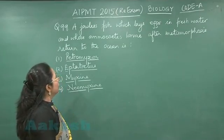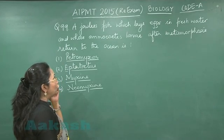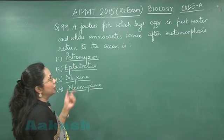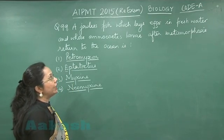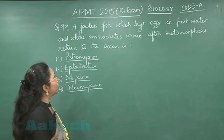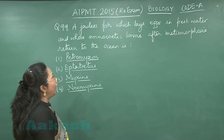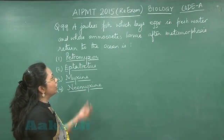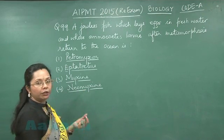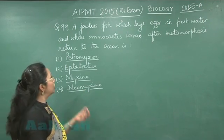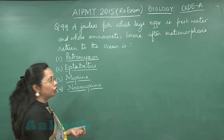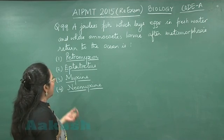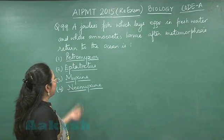Question 99: a jawless fish which lays eggs in fresh water, and then their larvae — that is ammocoetes larvae — after metamorphosis returns to the ocean.